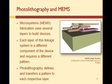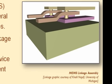Microsystems or MEMS fabrication uses several layers of various thin films to build a variety of devices. Layers typically consist of silicon dioxide, silicon nitride, polysilicon, and metals. The graphic illustrates the layers of a microsized linkage assembly.